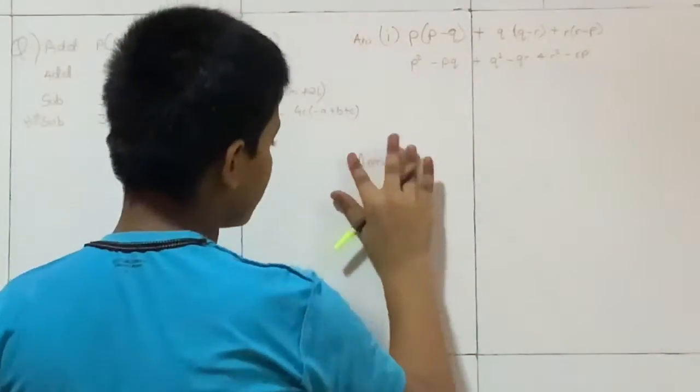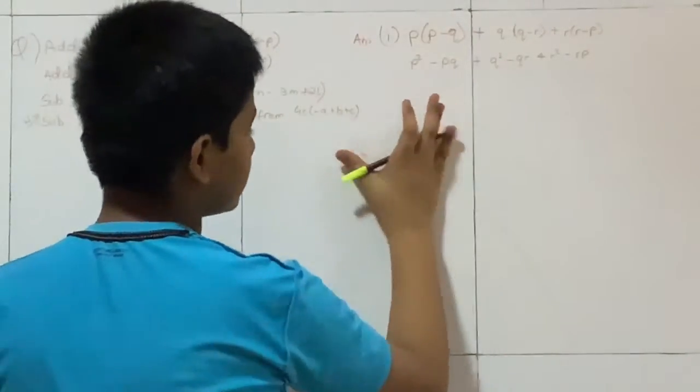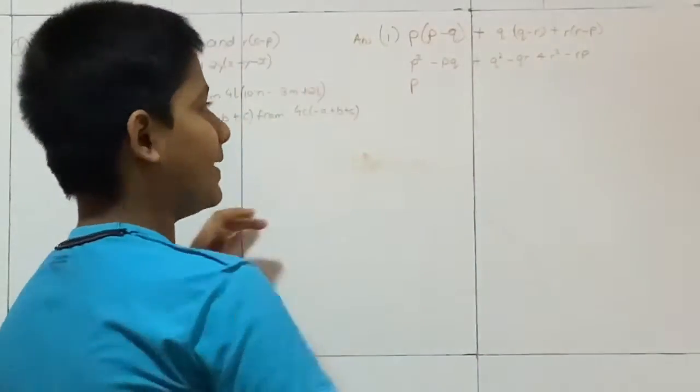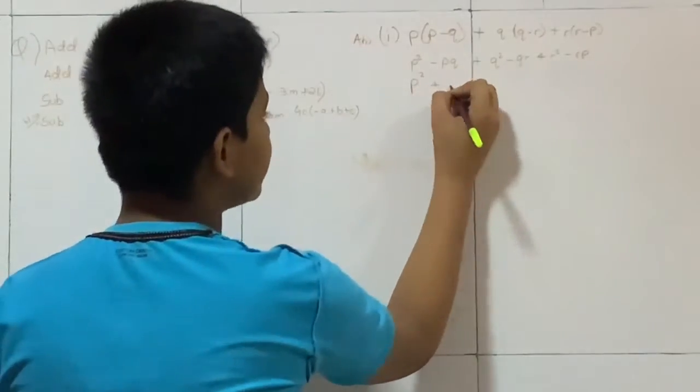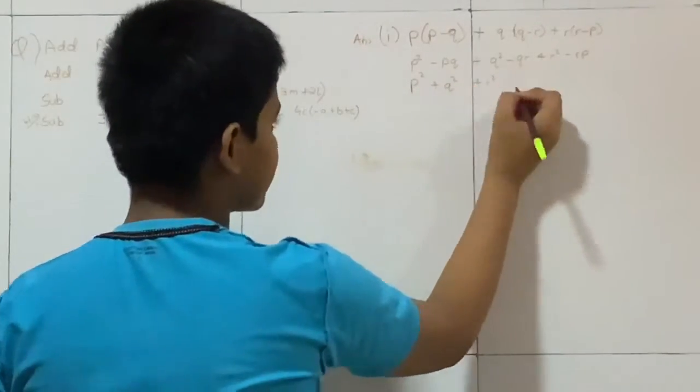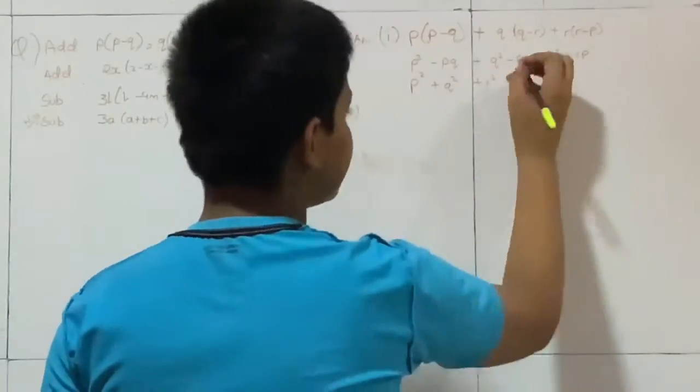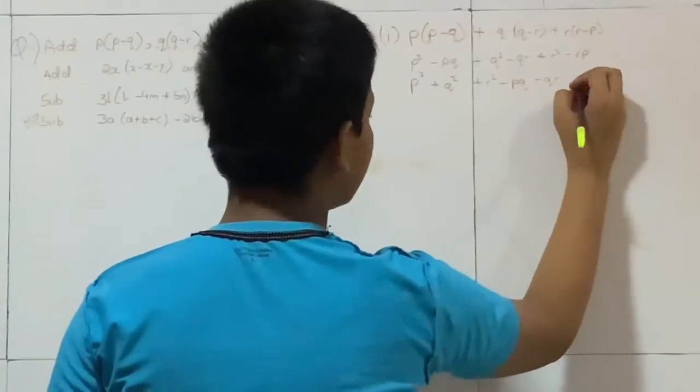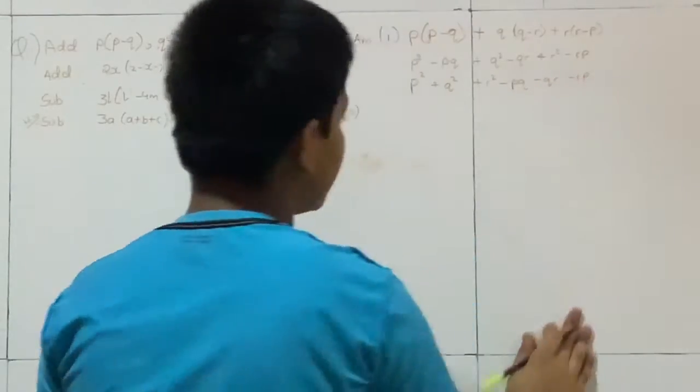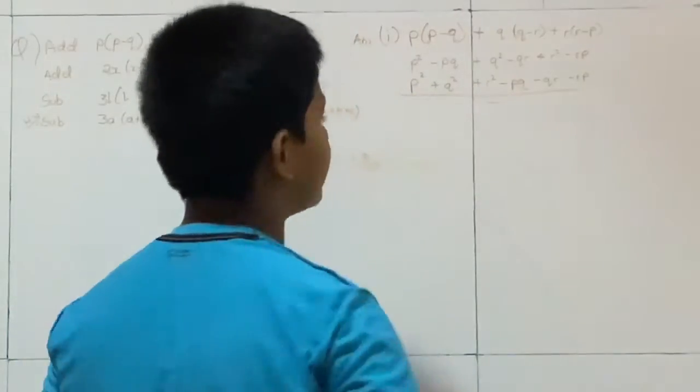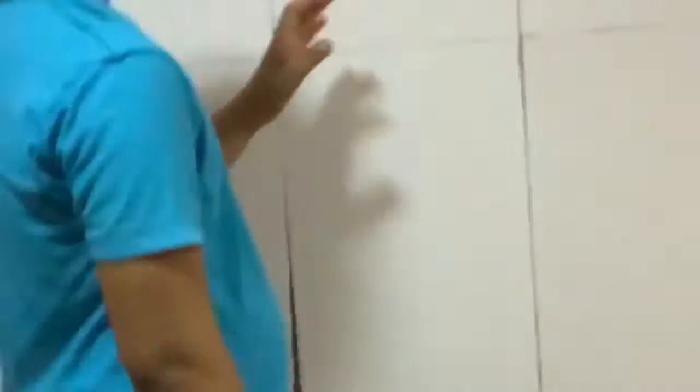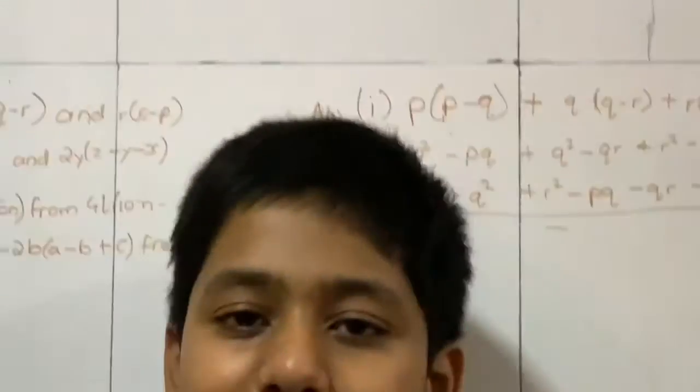Now here we have to take all the monomials aside. So here, monomials are P square plus Q square plus R square. And the binomials are minus PQ minus QR minus RP. So here our answer ends because they all are unlike terms, we cannot do the further calculation.